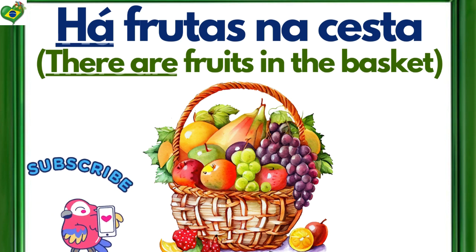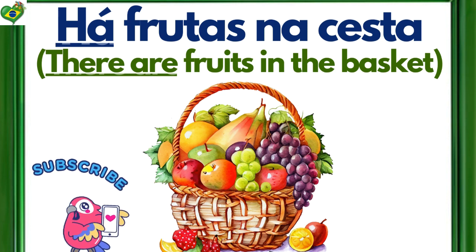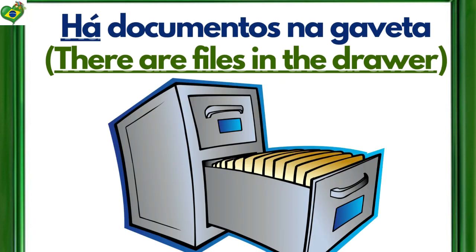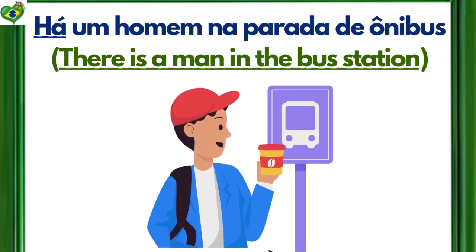There are fruits in the basket. Há um documento na gaveta. There is a file in the drawer. There are files in the drawer. Há um homem na parada de ônibus.